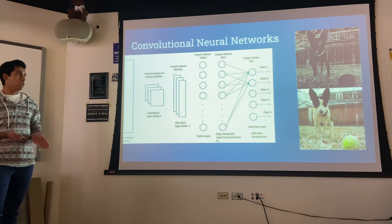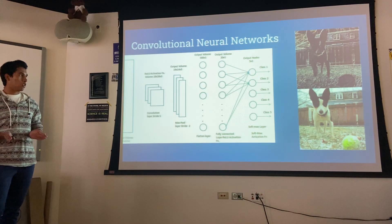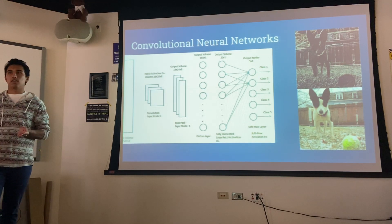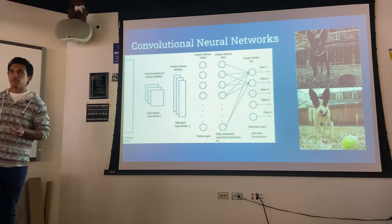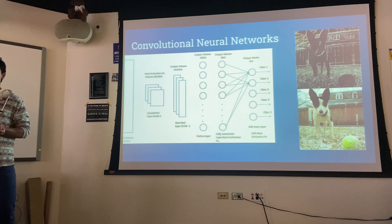Here we see a convolutional neural network. Convolutional neural networks are neural networks that are made basically just for image classification, and they do very well at this task.